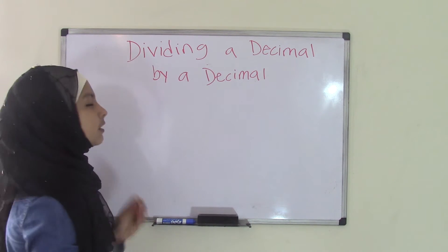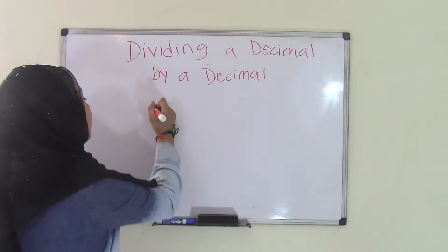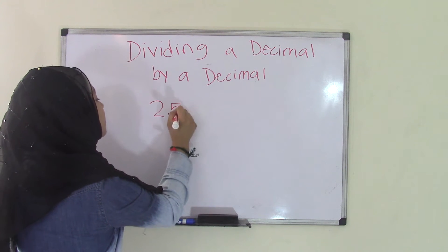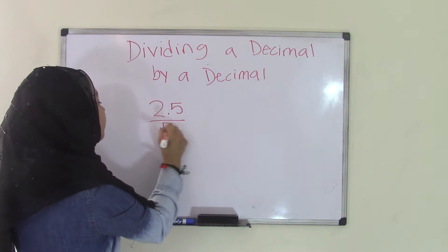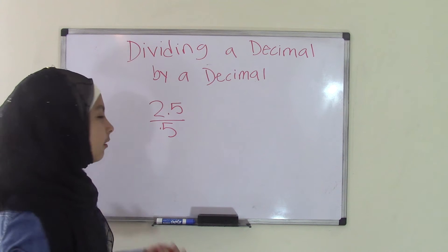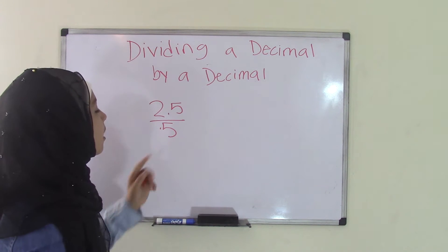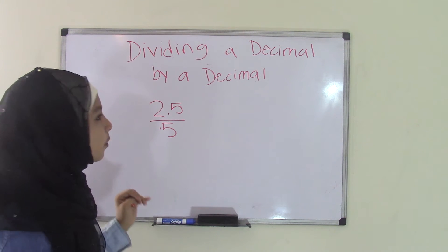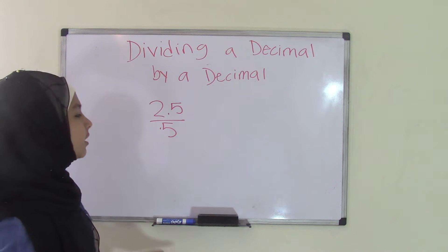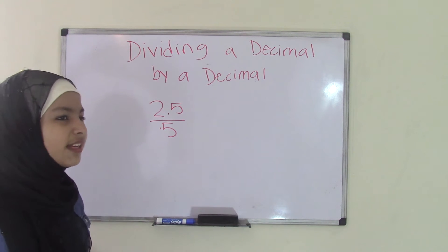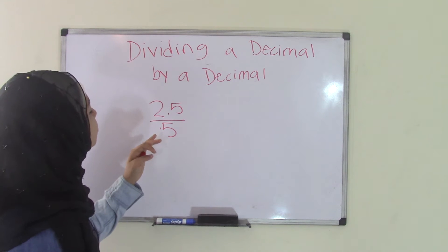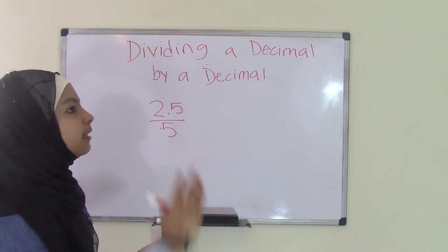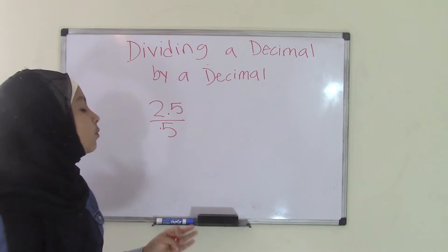Now let's say we have a problem. Let's start out with an easy problem. Like maybe we have 2.5 divided by 0.5. I know it can get a little confusing with the decimal points. What am I supposed to do with the decimal point? Does it make any difference to my quotient? So what we're going to do is we're going to remove the decimal point in a way that we still get our quotient and it's right.